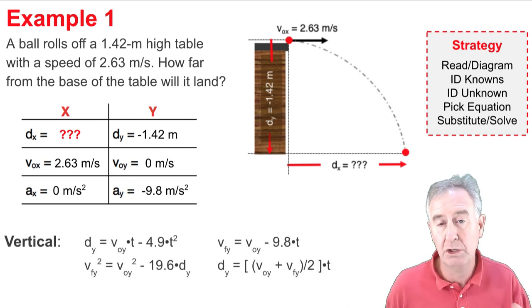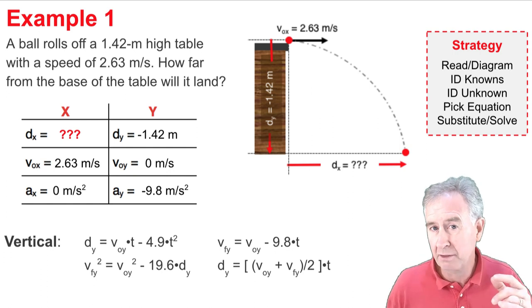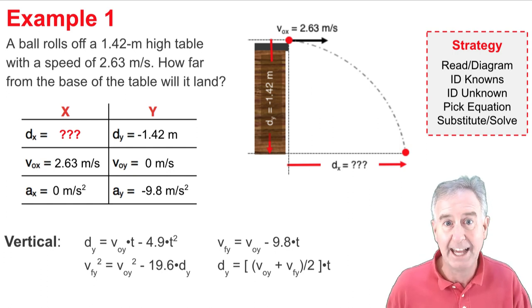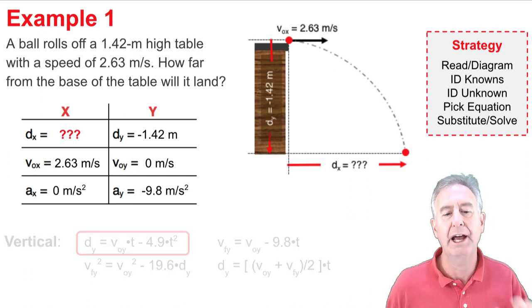So, I'm going to look for a vertical equation that has dy, voy, and ay in it, and I'm going to use it to solve for time. Here's your equations right here, and it's the first one top left that has just what I need to solve for time. So, I'm going to use that equation. I write it down